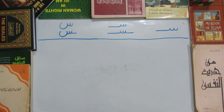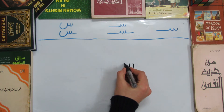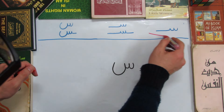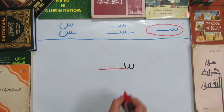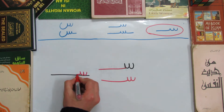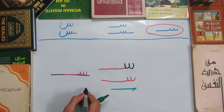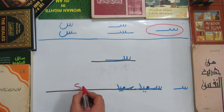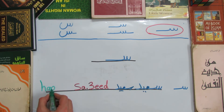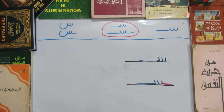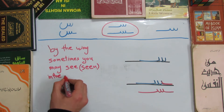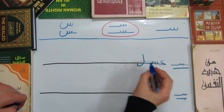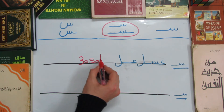Now let's go deeper by learning the shapes of the different positions of these two letters, starting with seen. For seen at the beginning of the word, we keep only the first part — the fork shape — and omit the other one, adding a ligature to connect it with the next letter. An example is the word Saeed, meaning 'happy.' The form of seen in the middle of the word has two shapes, depending on whether it is connected with one letter after it or with both letters before and after it. An example is the word Asal, meaning 'honey.'